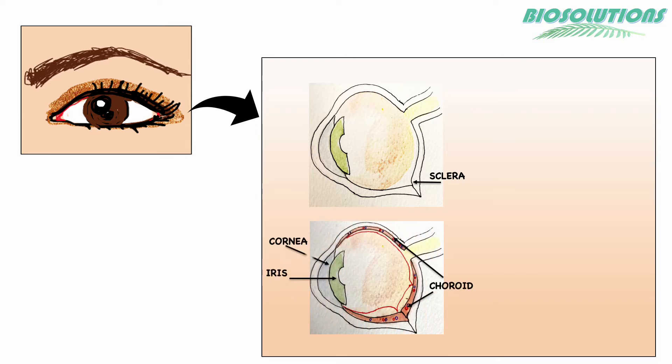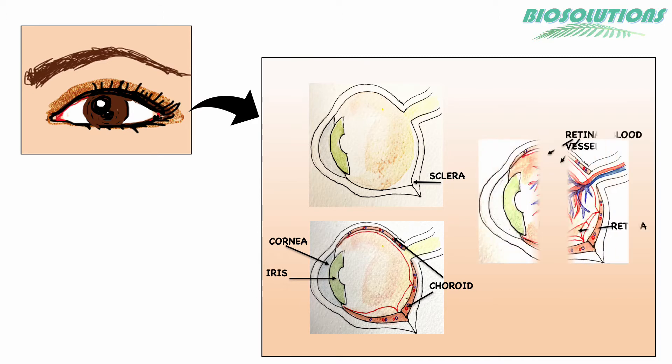Cornea is the transparent front part of the sclera; it focuses and refracts light rays. The choroid is the middle thin layer with a blood vessel network to nourish the retina.